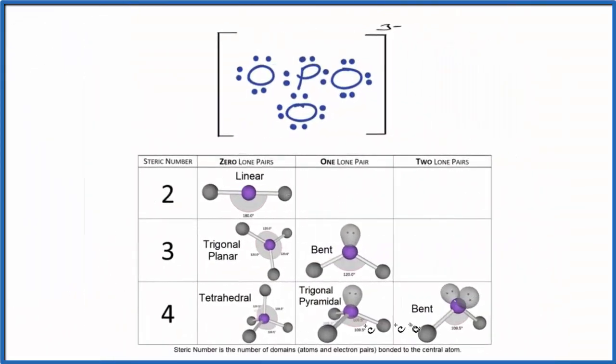So this is a useful table to know. It's also useful to understand how those electron domains, when they're put on the atom, push each other away and form that shape. So this is Dr. V, and thanks for watching.